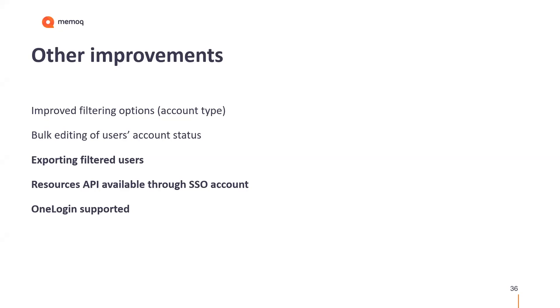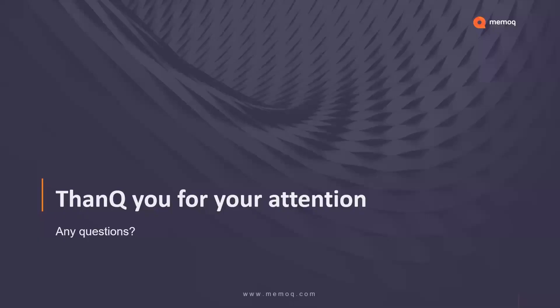Two more amendments: the resources API now has full access to your OIDC account, and if your company uses OneLogin for authentication, system administrators can now configure it more easily on their MemoQ server. That's it for today — thank you for your attention, and let's see the questions.